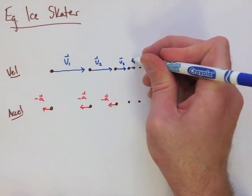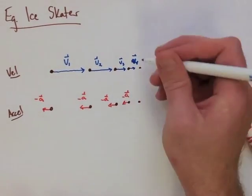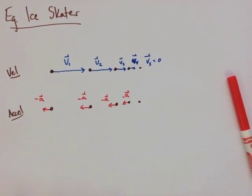Now our last velocity vector will be a length of zero, and you'll also notice that our last acceleration vector should be a length of zero as well, otherwise we would start moving in the opposite direction.